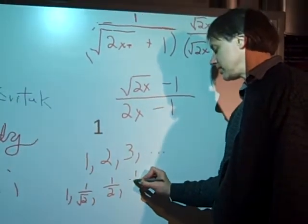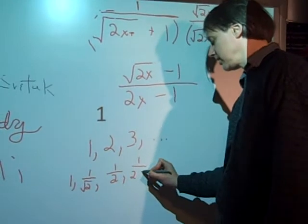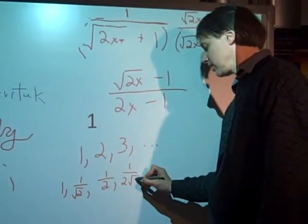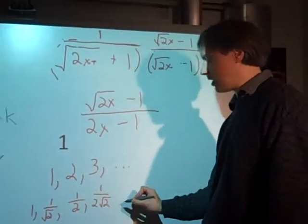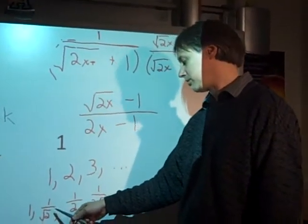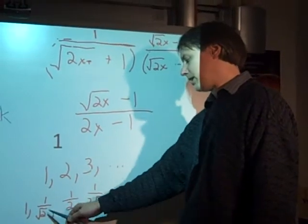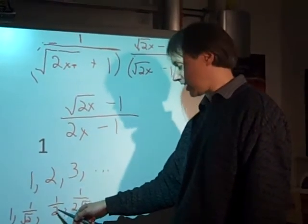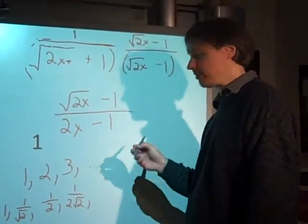And you can kind of see what's happening. As I continue on, I keep on multiplying by one over square root of two. One times one over square root of two gives me one over square root of two. Multiply it by one over square root of two again, I get a half. Continue on.